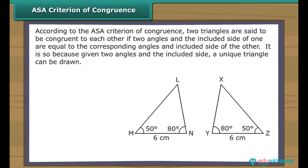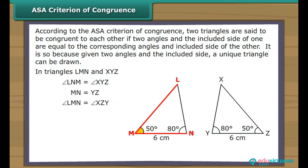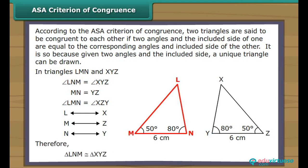According to the ASA criterion of congruence, two triangles are said to be congruent if two angles and the included side of one are equal to the corresponding angles and included side of the other. It is so because, given two angles and the included side, a unique triangle can be drawn. Vertex L corresponds to vertex X, vertex M to vertex Z, and vertex N to vertex Y. Therefore, triangle LMN is congruent to triangle XYZ.